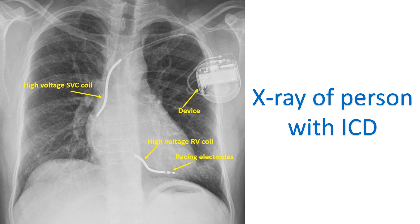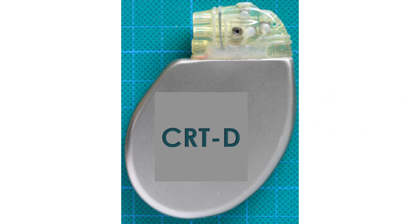The ICD gives immediate shocks for the more serious rhythm disturbance known as ventricular fibrillation, which is immediately fatal unless treated. CRT can be combined with ICD in a single device known as CRTD, which is used when there is severe heart failure with risk of life-threatening heart rhythm disorders.